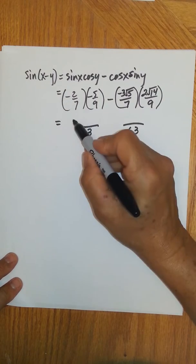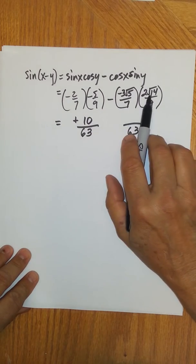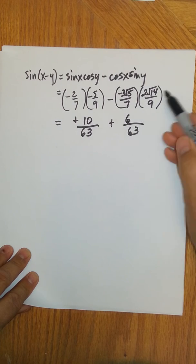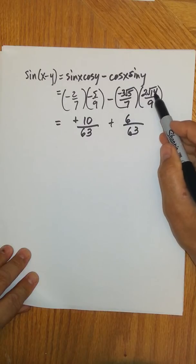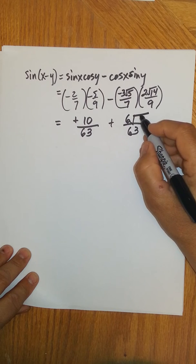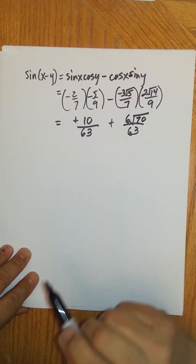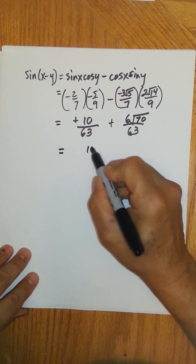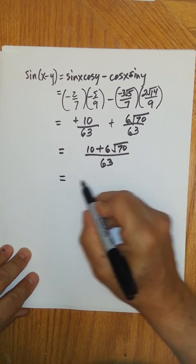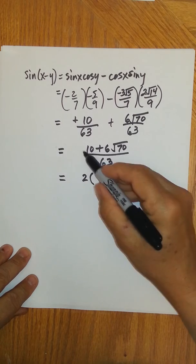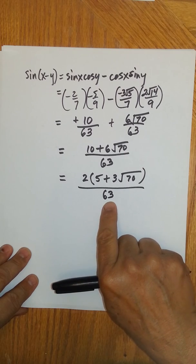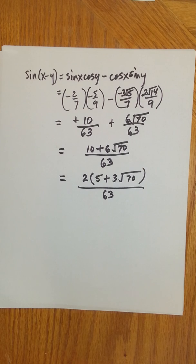A negative times a negative gives a positive, so the first term is ten over sixty-three. For the second term, negative times negative times positive is positive, giving six square root of seventy over sixty-three — since five times fourteen equals seventy and there are no repeated prime factors to simplify further. The answer is ten plus six square root of seventy, all over sixty-three. You can factor out the two to write it as two times the quantity five plus three square root of seventy, over sixty-three, but since sixty-three has no factor of two, this is our final answer.